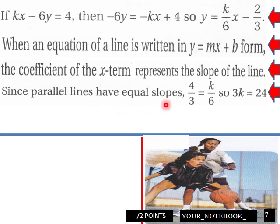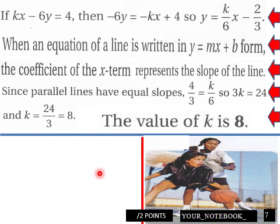Since parallel lines have equal slopes, 4/3 x equals k over 6, so 3k equals 24, and k equals 24 over 3 equals 8. The value of k would be 8 in this case here.